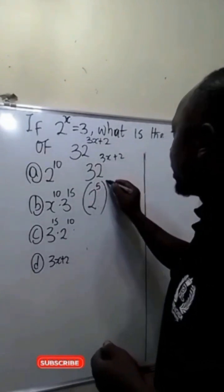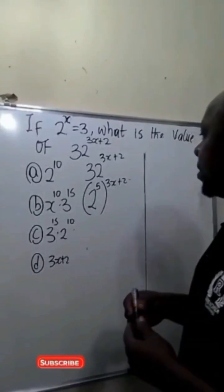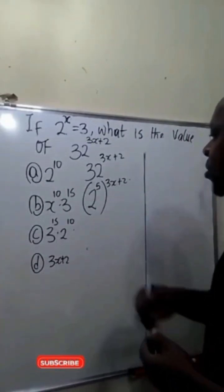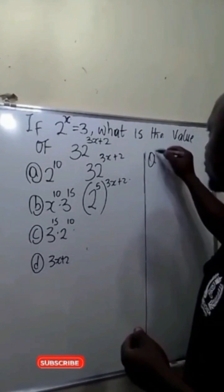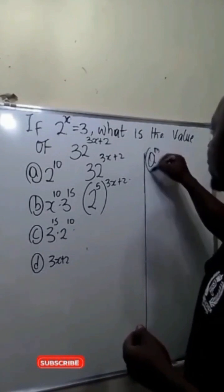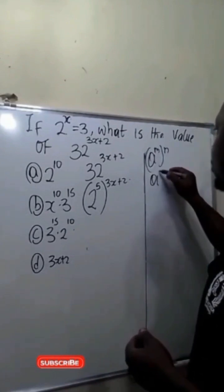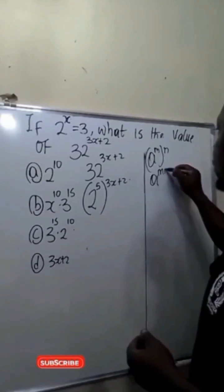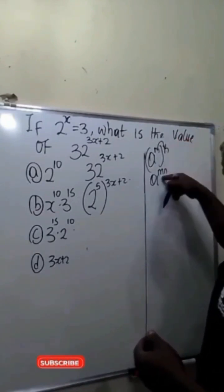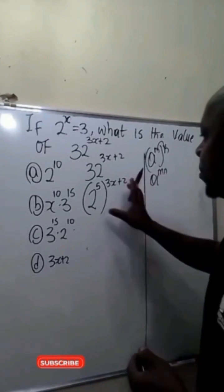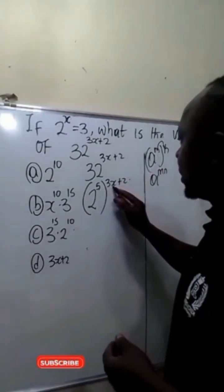So this will become 2 raised to power 5, bracket 3x plus 2. The next thing we'll be doing is to apply the law of indices, which says if we have a raised to power m bracket n, this is the same as a raised to power m times n. We're going to apply the same here.